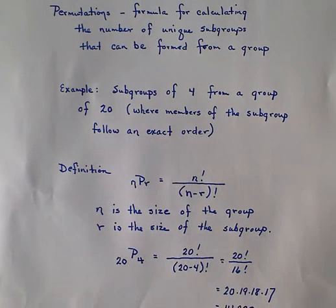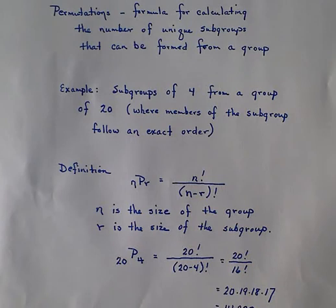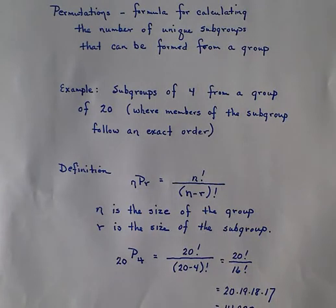In the example given, it says subgroups of four from a group of 20 where the members of the subgroup follow an exact order — that follows with what a permutation does. So we want to find out how many of those subgroups there are going to be within these parameters.